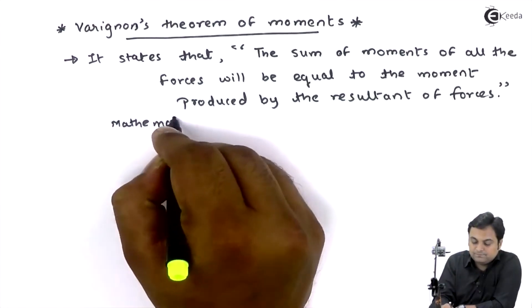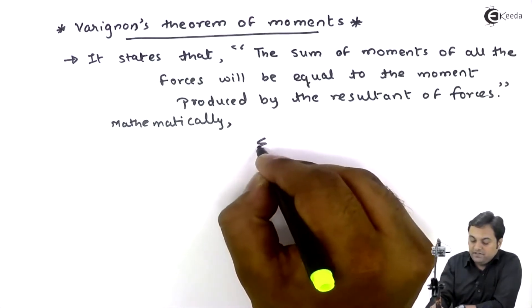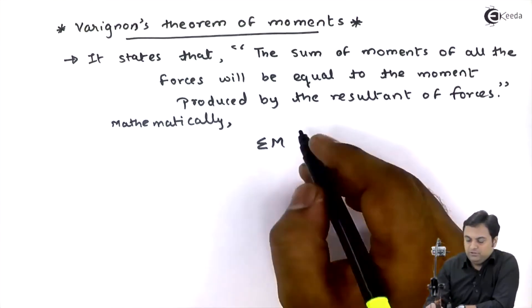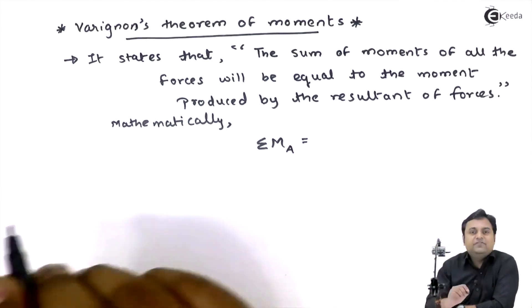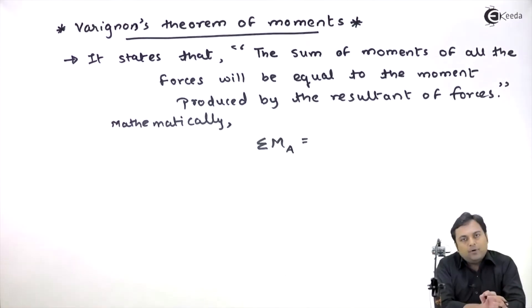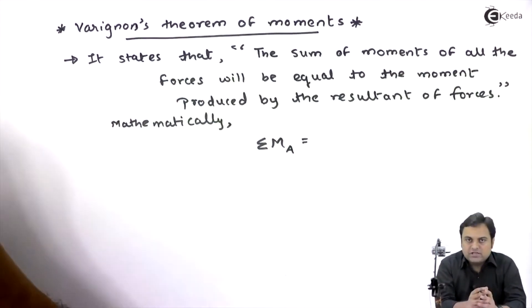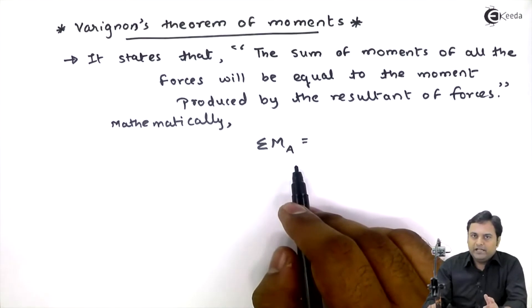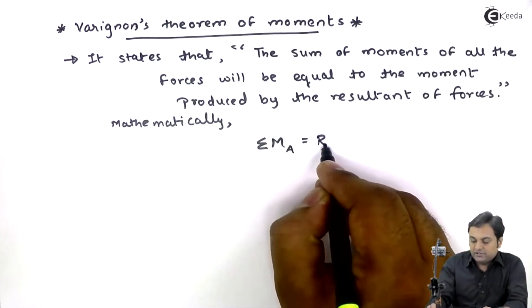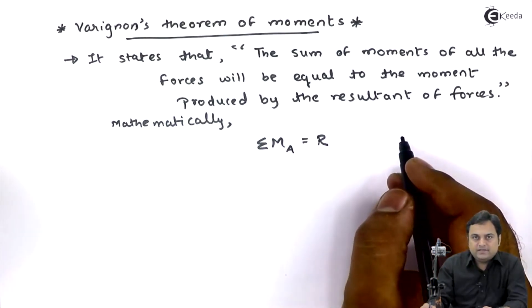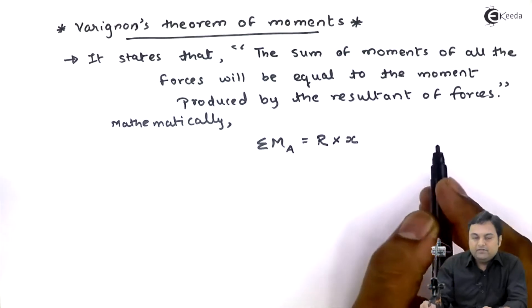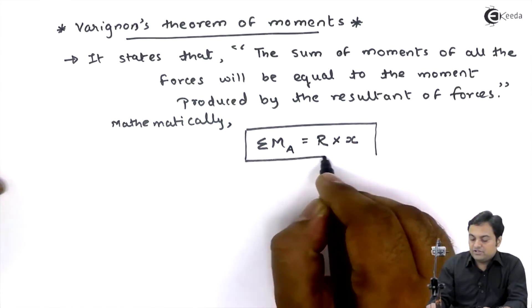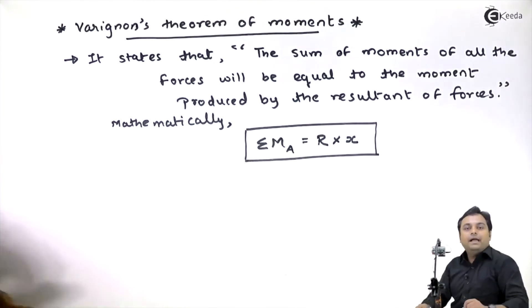If I write it mathematically: the summation of moments of all forces about one single point, say point A, will be equal to the moment of the resultant. The resultant force is denoted by R and the distance of the resultant force from point A is written as X, giving the equation: ΣM_A = R × X.